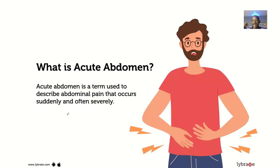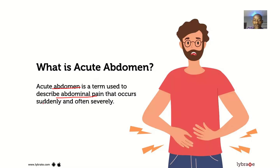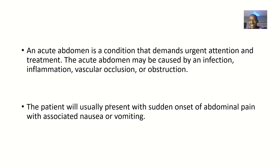Acute abdomen is a term used to describe abdominal pain. If you say acute abdomen, that means the abdominal pain is starting more suddenly and it's often severe, because it's a new pain the patient is not used to — unlike chronic pain that has been there over time. The acute one starts all of a sudden.